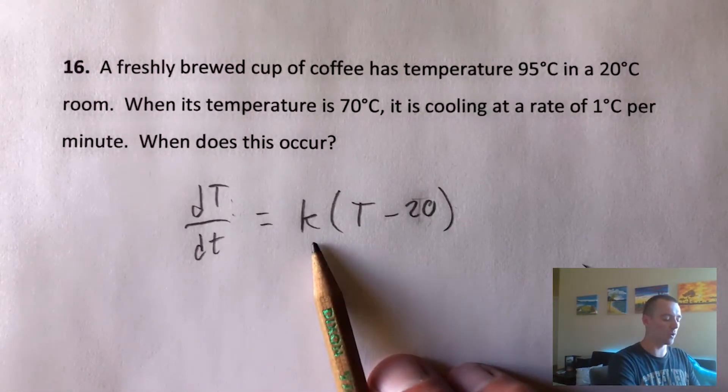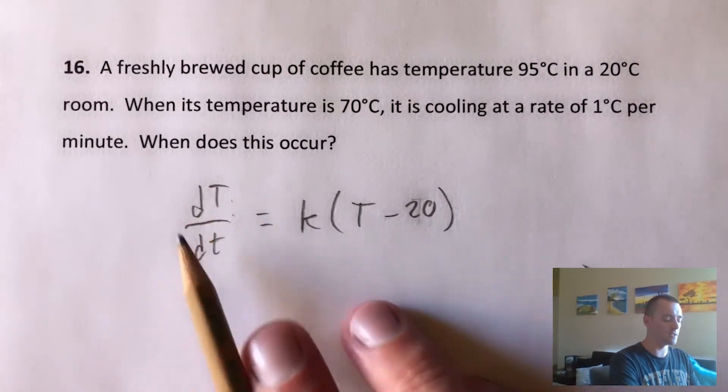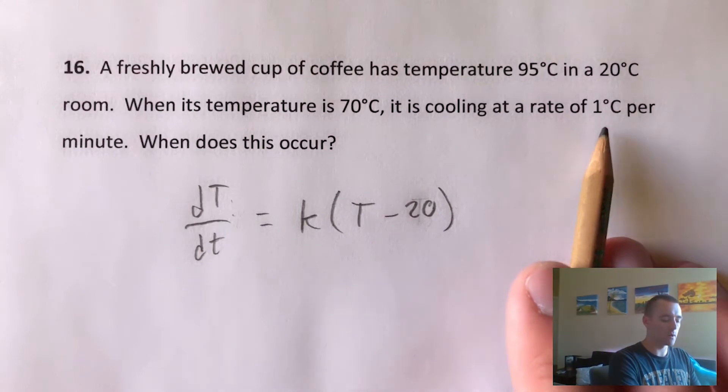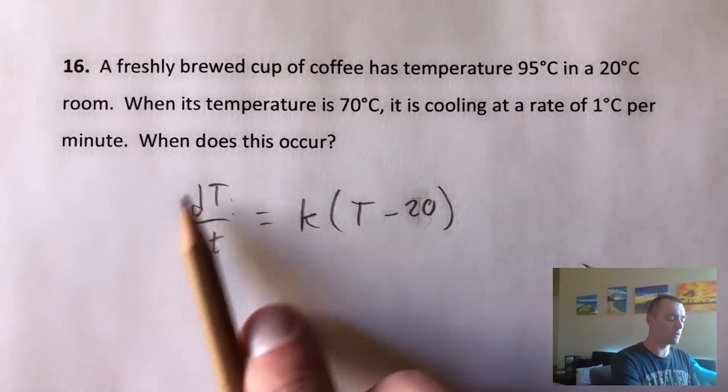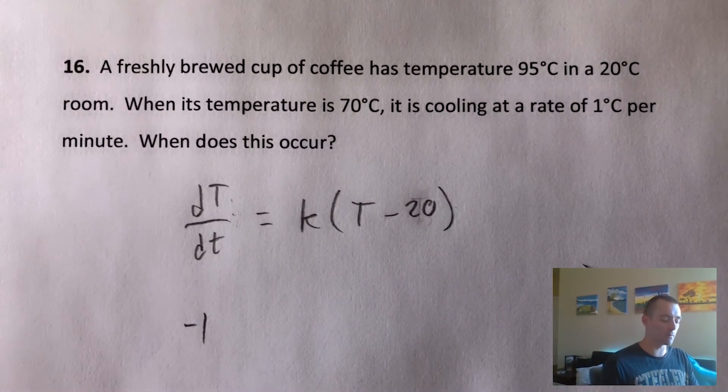We can do it with this differential equation because we know the rate of change of the temperature, dT/dt, is one degree per minute. At this specific moment when it's 70 degrees, we know that this whole thing is going to be negative one. The temperature is decreasing by one degree per minute.